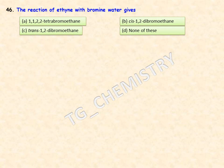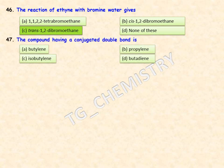The reaction of ethene with bromine water gives which product? Options are 1,1,2,2-tetrabromoethane, cis-1,2-dibromoethane, trans-1,2-dibromoethane, or none of these. The right answer is trans-1,2-dibromoethane — option C — as anti addition gives the trans product.